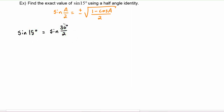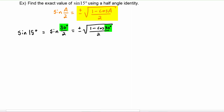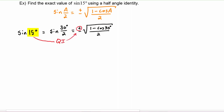Now that it's in this form, we can apply this identity and say that this will be plus or minus the square root of one minus cosine of 30 degrees, divided by two. Right away we can choose the plus or minus sign because we know that 15 degrees is in quadrant one.